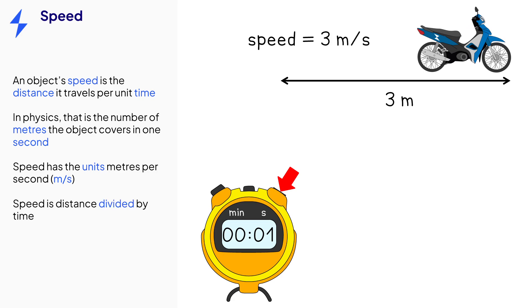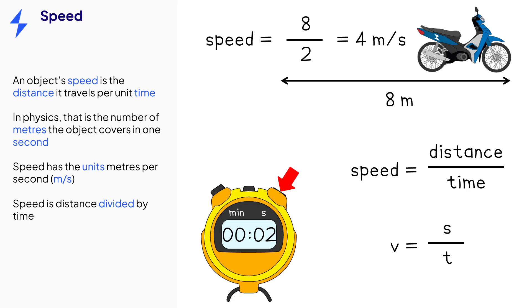If we know the distance an object covers and the time that takes, we can calculate speed with the equation speed equals distance divided by time. This can be written with symbols as v equals s over t. For example, if the bike travels eight meters in two seconds, eight divided by two gives us the speed, which is four meters per second.